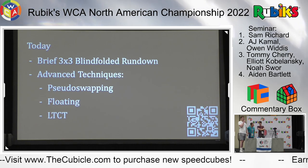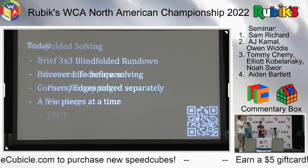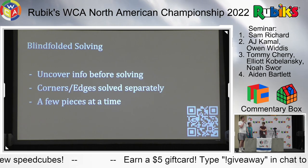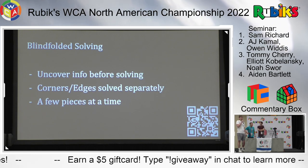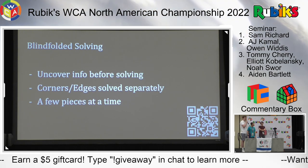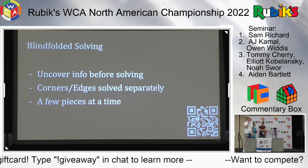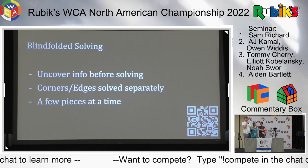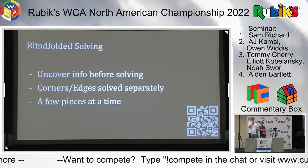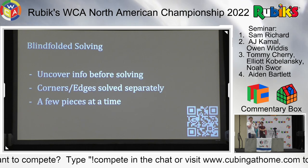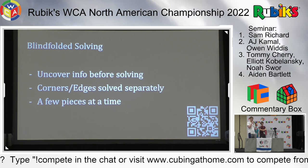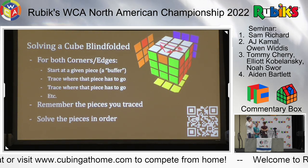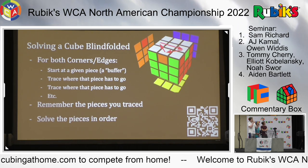So first of all, blindfolded solving - how does it differ from regular 3x3 solving? My best way to explain this is that you essentially have to one-look every single solve, except you don't use a regular speedsolving method like CFOP, because those methods involve looking at the cube after different steps. Instead, we use a different method where we solve corners and edges separately, a couple pieces at a time without affecting other pieces.